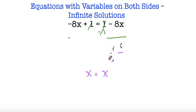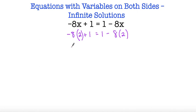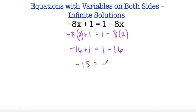When x equals x like that, it means I could substitute x for any number. So let's do 2: negative 8 times 2 plus 1 is equal to 1 minus 8 times 2. Negative 8 times 2 is negative 16, plus 1 is equal to 1 minus 16. So negative 16 plus 1 is negative 15, is equal to 1 minus 16 which is negative 15. By substituting both x's with 2 we got negative 15 is equal to negative 15.